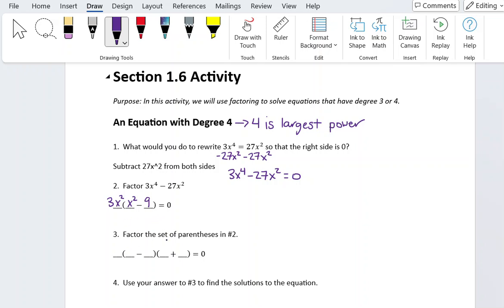Now we're going to continue to factor the set of parentheses in number 2. So my 3x squared I'm just going to carry over on the outside, and then I'm going to look at x squared minus 9. Well, we talked about this earlier. We have a perfect square here with 3. We have no middle term, so that means that we're looking for two sets of parentheses.